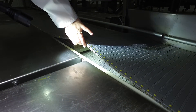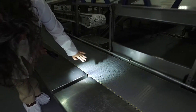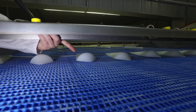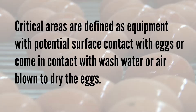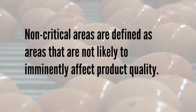Organoleptic inspection assessments include sight, smell, and touch. However, microbial growth will not always be seen, smelled, or felt. Critical areas are defined as equipment with potential surface contact with eggs or that come in contact with wash water or air blown to dry the eggs. Non-critical areas are defined as areas that are not likely to imminently affect product quality. Non-critical does not mean it is not important. Non-critical unsatisfactory conditions should be addressed after the processing line has been started, unless unable to safely do so during processing.